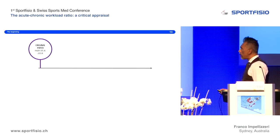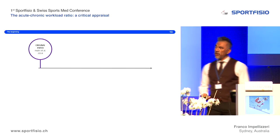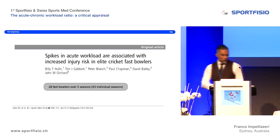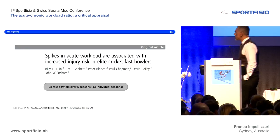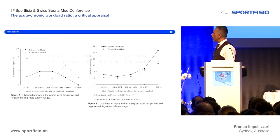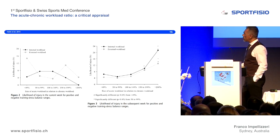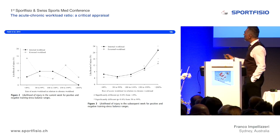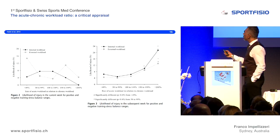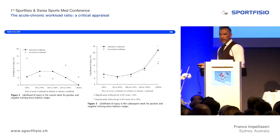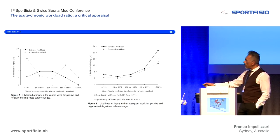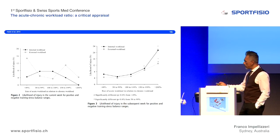The first publication about the acute-chronic ratio and its relation to injury was in 2014, the paper by Hulin, done on cricket bowlers using 28 bowlers over five seasons. They showed a relation — the likelihood of injury in the subsequent week — and there was a higher injury risk using both internal load (session RPE) and external load (number of balls). When looking at the current week, however, the pattern was different.